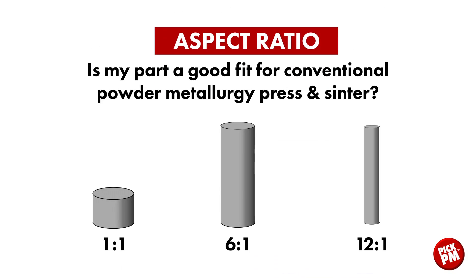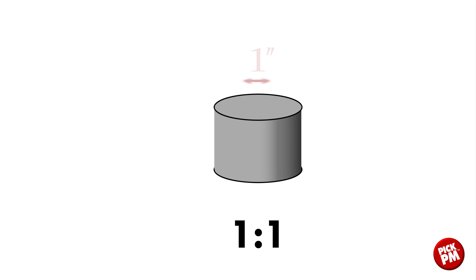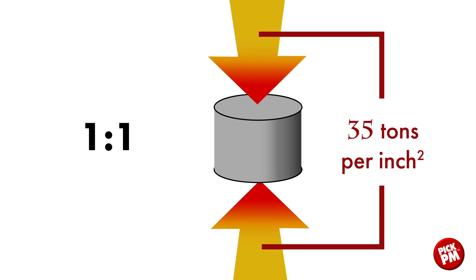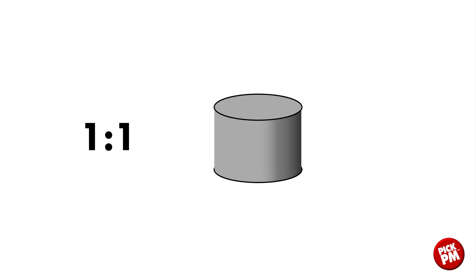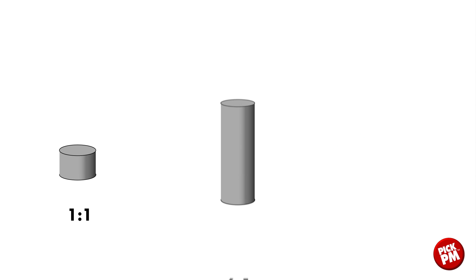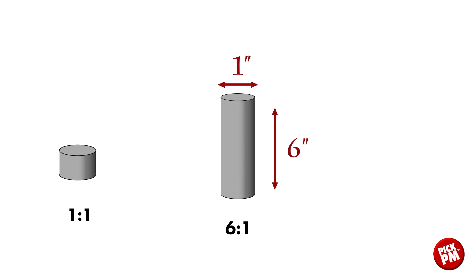Looking at this graphic, we see in the bottom left a one-to-one aspect ratio — that is a one-inch diameter by one-inch tall component. If we apply 35 tons per square inch to a typical iron powder, we'll achieve around a 6.95 gram per cubic centimeter density. If we take the same one-inch diameter and make that 6 inches tall, we have a 6-to-1 aspect ratio.